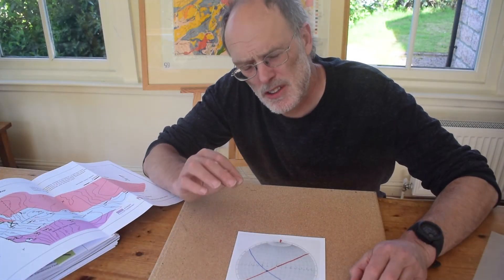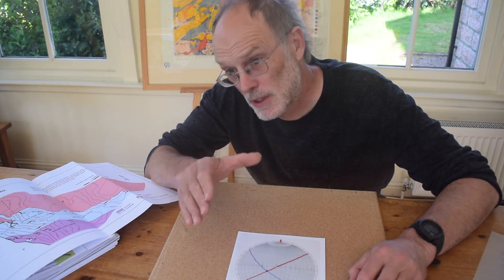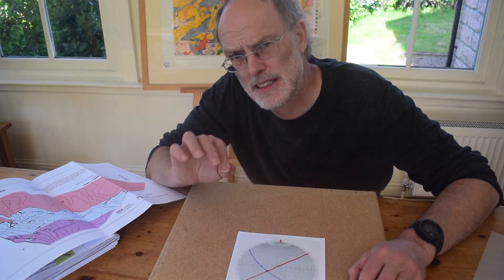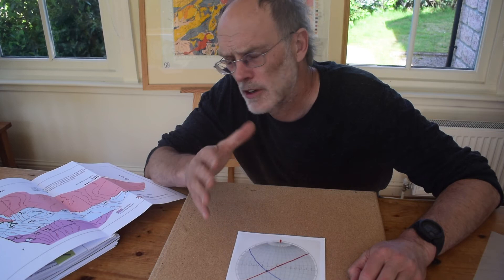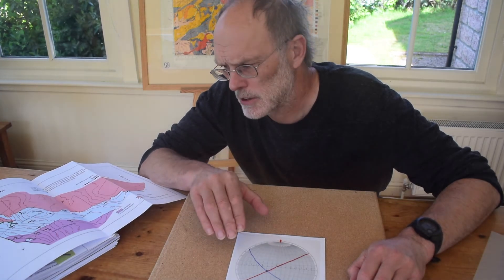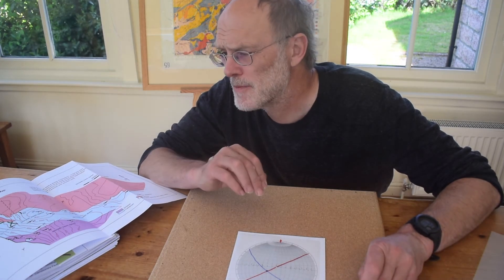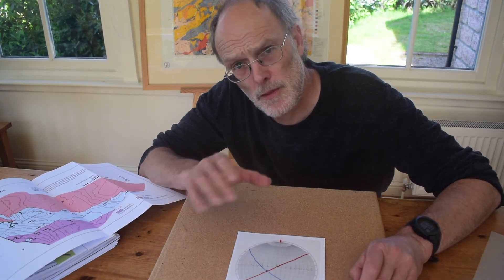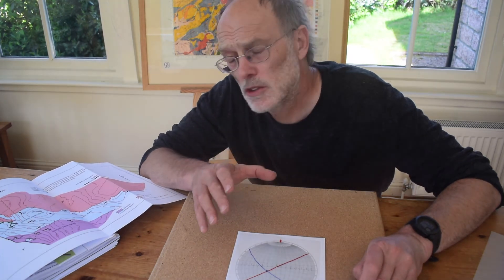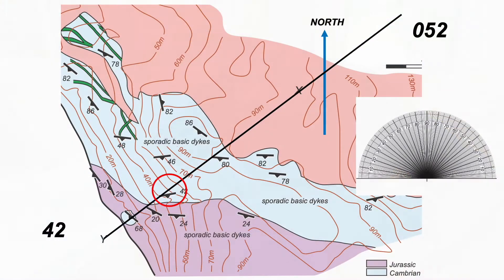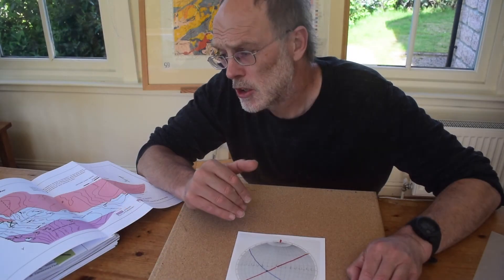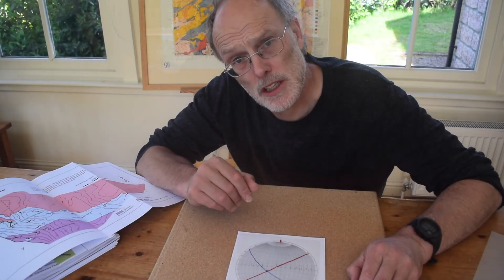Our apparent dip of 66 is only slightly different from the true dip of 68 — it's always going to be less than the true dip, but here it's only down by a couple of degrees. You might think that's barely worth worrying about, but now let's plot a different data point further up on the map. Here we have a bed dip of 42 degrees, and we can see the strike is really quite oblique to the plane of the cross-section.